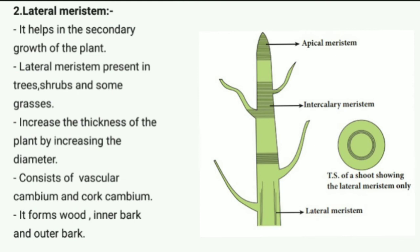Primary phloem gives rise to secondary phloem and primary xylem gives rise to secondary xylem, forming the vascular cambium ring. The vascular cambium is of two types: intrafascicular cambium, present between xylem and phloem, and interfascicular cambium, present between two vascular bundles. Lateral meristem forms wood, inner bark, and outer bark.